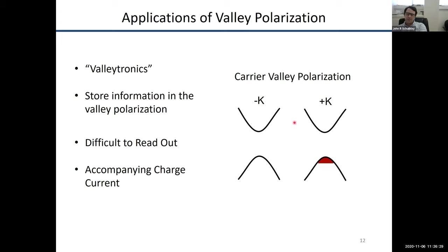This gives us an optical way to both write and read valley polarization, giving rise to the idea of so-called valleytronics, in analogy to spintronics — we could perhaps store information in this valley degree of freedom. One idea is to dope the sample with holes and preferentially polarize the hole population into the plus K valley. This has been done using techniques such as ferromagnetic substrates, since spin is coupled to valley, so spin-polarized holes will preferentially go into one valley.